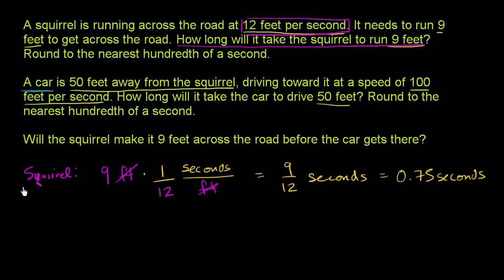Now let's think about the car, and it's the exact same logic. They tell us that the car is 50 feet away. So the squirrel is trying to cross the road like that, and the car is 50 feet away coming in like that, and we want to figure out if the squirrel will survive. So the car is 50 feet away.